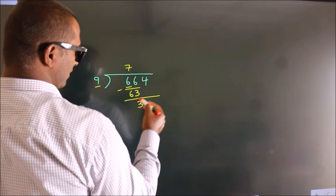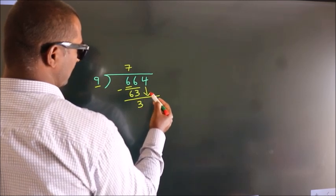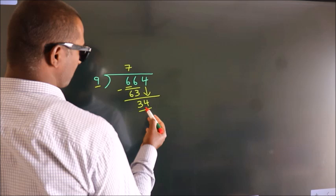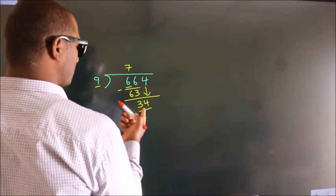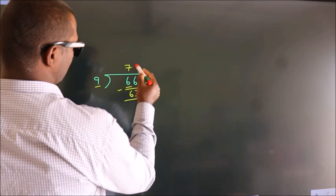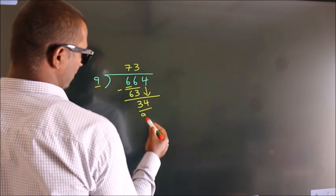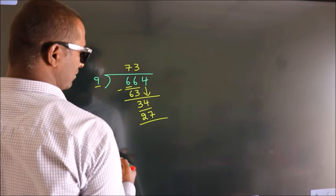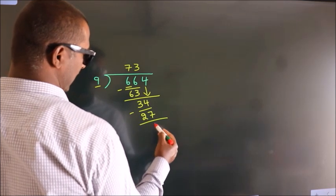After this, bring down the next number. So 4 down, which gives us 34. A number close to 34 in the 9 table is 9 times 3, which is 27. Now we subtract and we get 7.